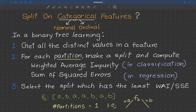Let's see how a decision tree splits on categorical features. There are two types of categorical features: nominal and ordinal. In ordinal features there is an inherent order associated with the categories. For example, consider a category called weather — the values can be high, medium, and low. Even though they are categories, there is an inherent order: high is greater than medium and medium is greater than low. When there is an inherent order, we call them ordinal features.